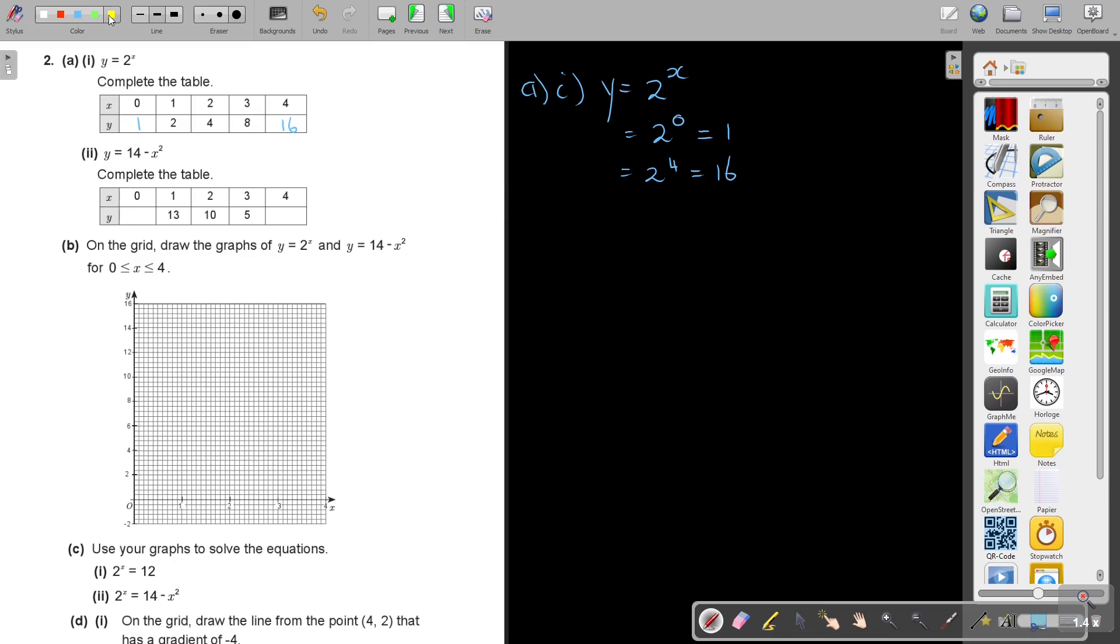And then the next one, number c. So this is y equals 14 minus x squared. That is going to be 14 minus 0 squared, and that's going to be 14. And then y equals 14 minus 4 squared. So that's going to be 14, 4 times 4 is 16, and that is going to be negative 2.